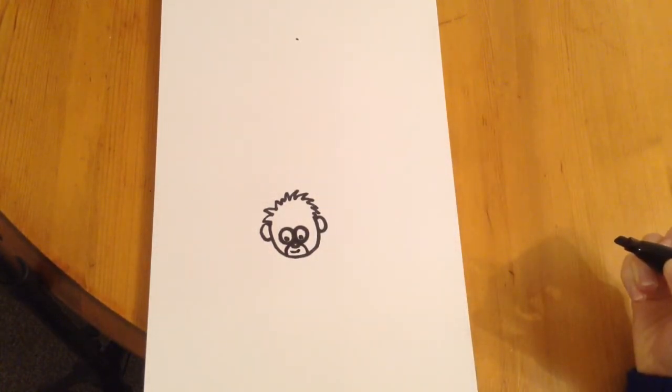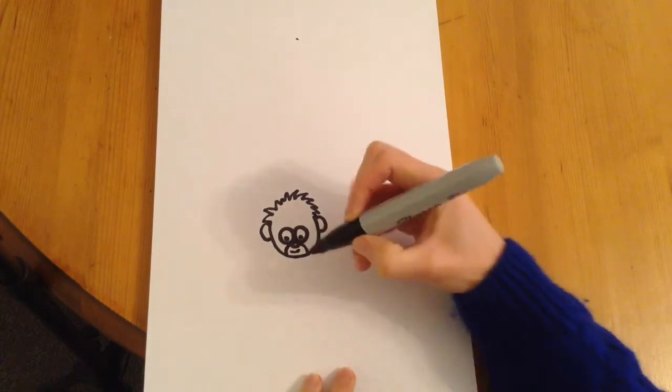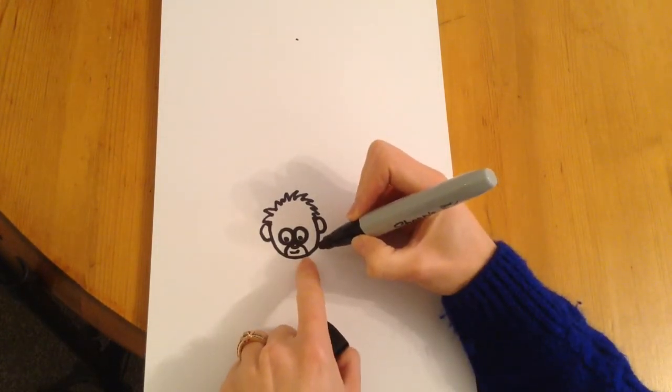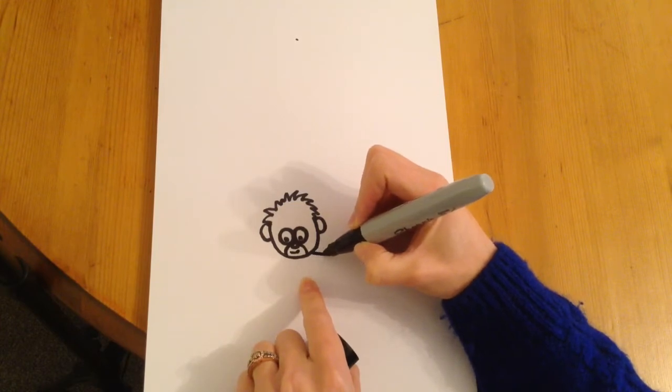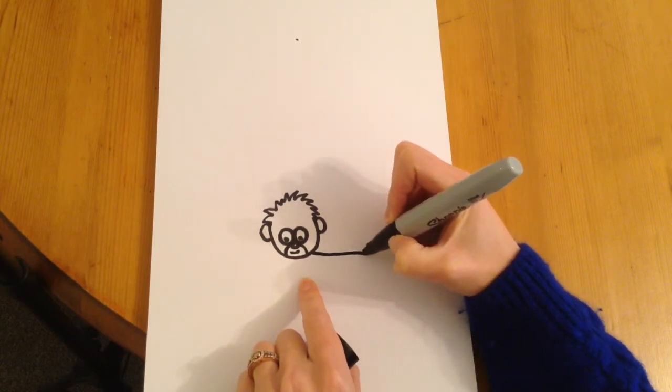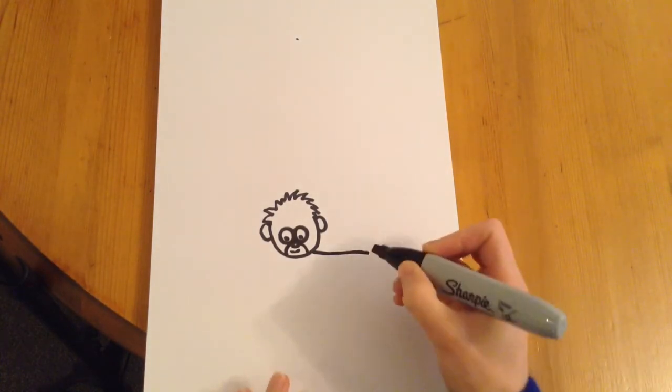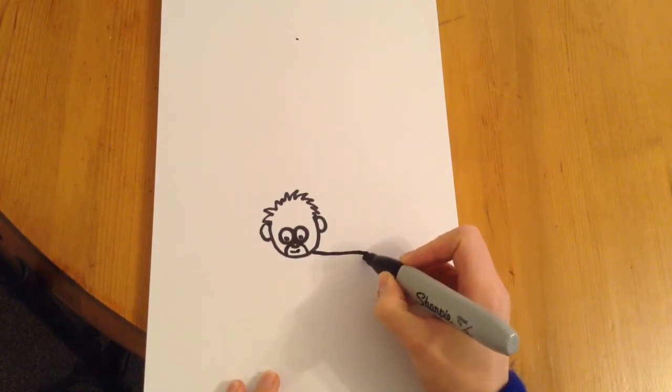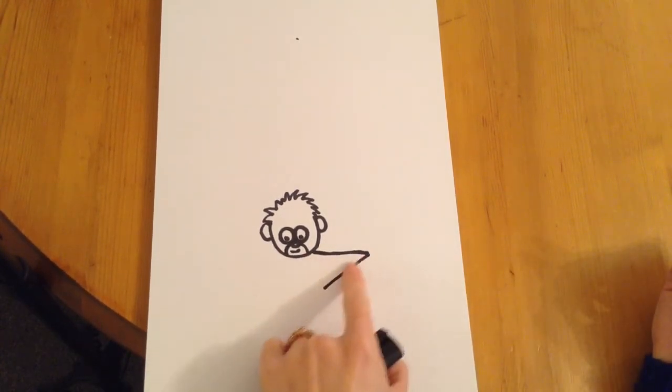Okay, so next we have to draw the arms. So we'll start with the right hand arm. At the bottom of his head, just draw a line horizontally to the side just like that. Now we're going to make that line into a V shape, so there's the other part of the line, so you can see there's a V shape there.